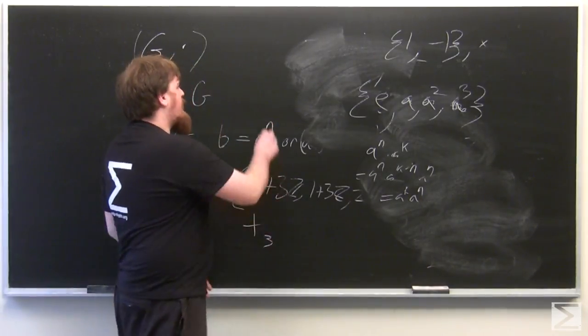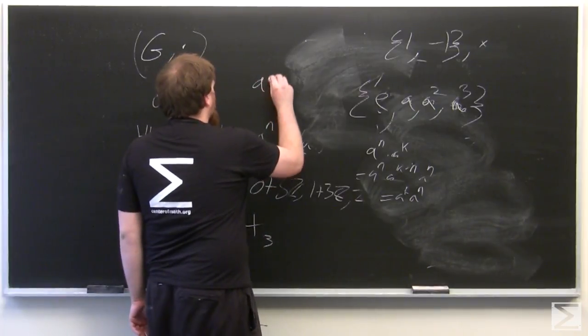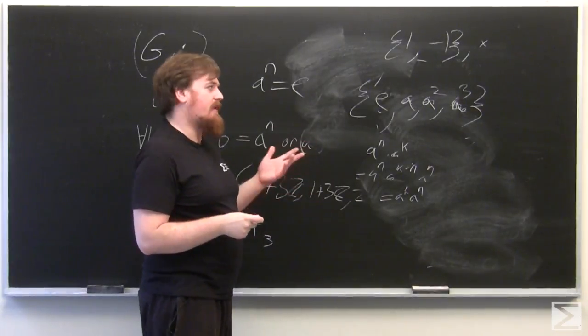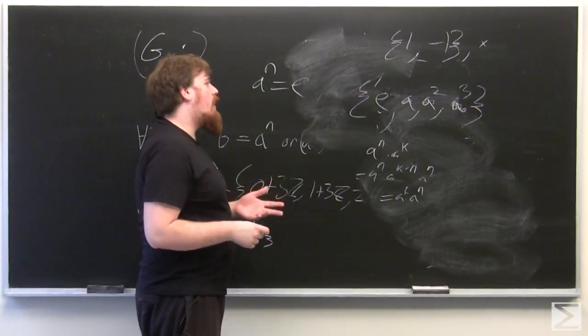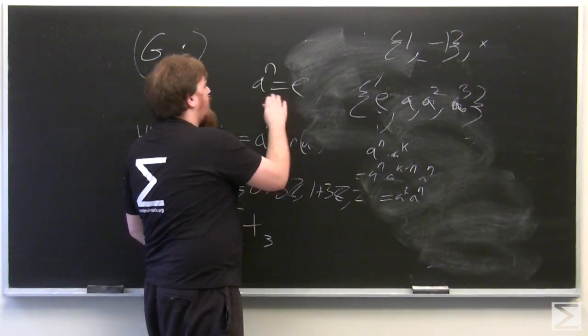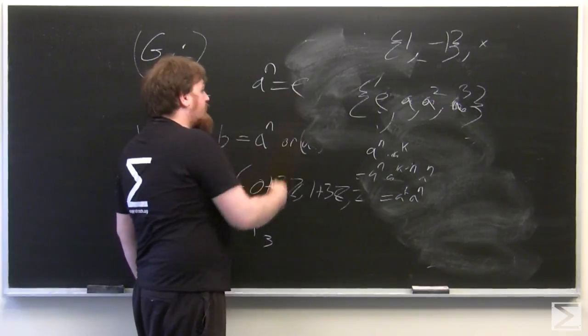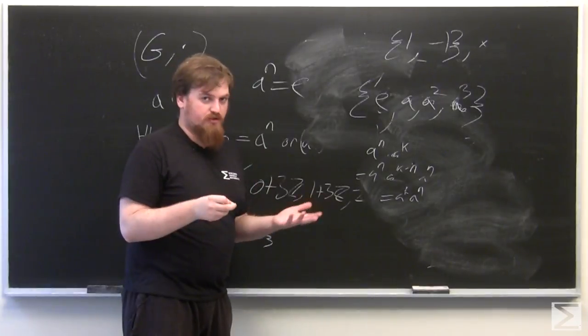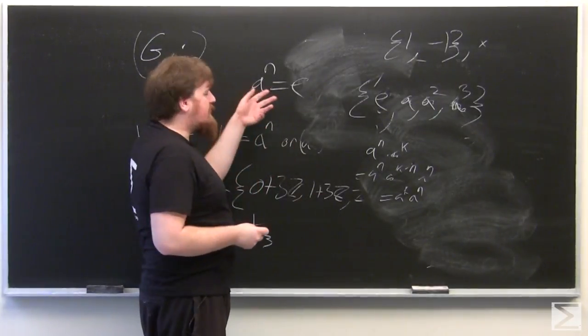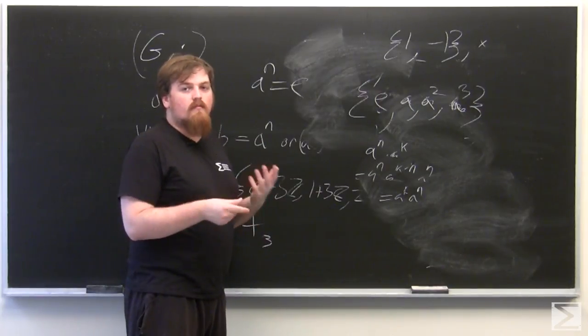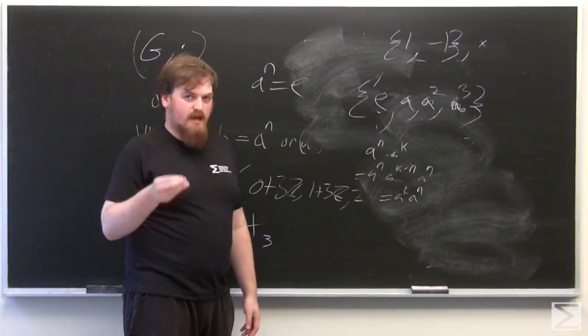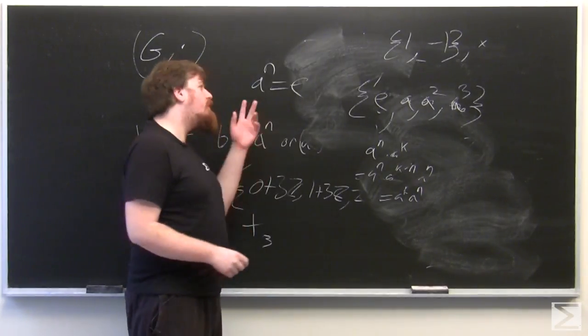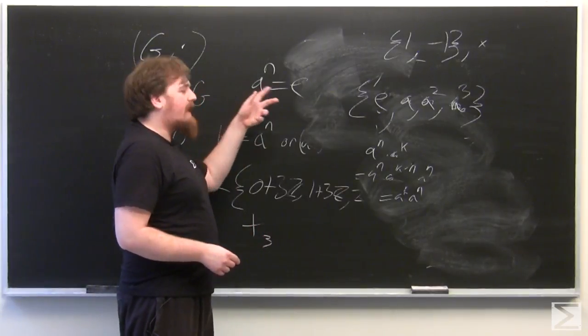If the cyclic group has size n, again, A to the n has to equal the identity of the group for a finite cyclic group of size n. Because otherwise, if A to a smaller power had to equal the identity, then A to the everything above that would be already accounted for, and thus the group could grow no larger. Whereas if A to the n didn't equal the identity, then you could put more powers in beyond A to the n.